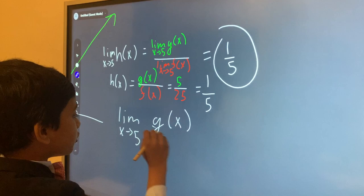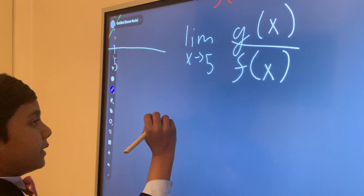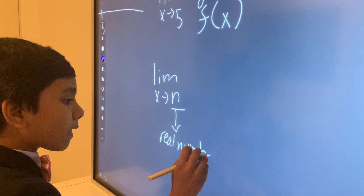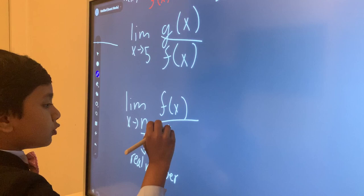Now let's just simplify this statement. Say that we have the limit as x approaches n, n being any real number, of the ratio of any two functions f(x) over g(x).